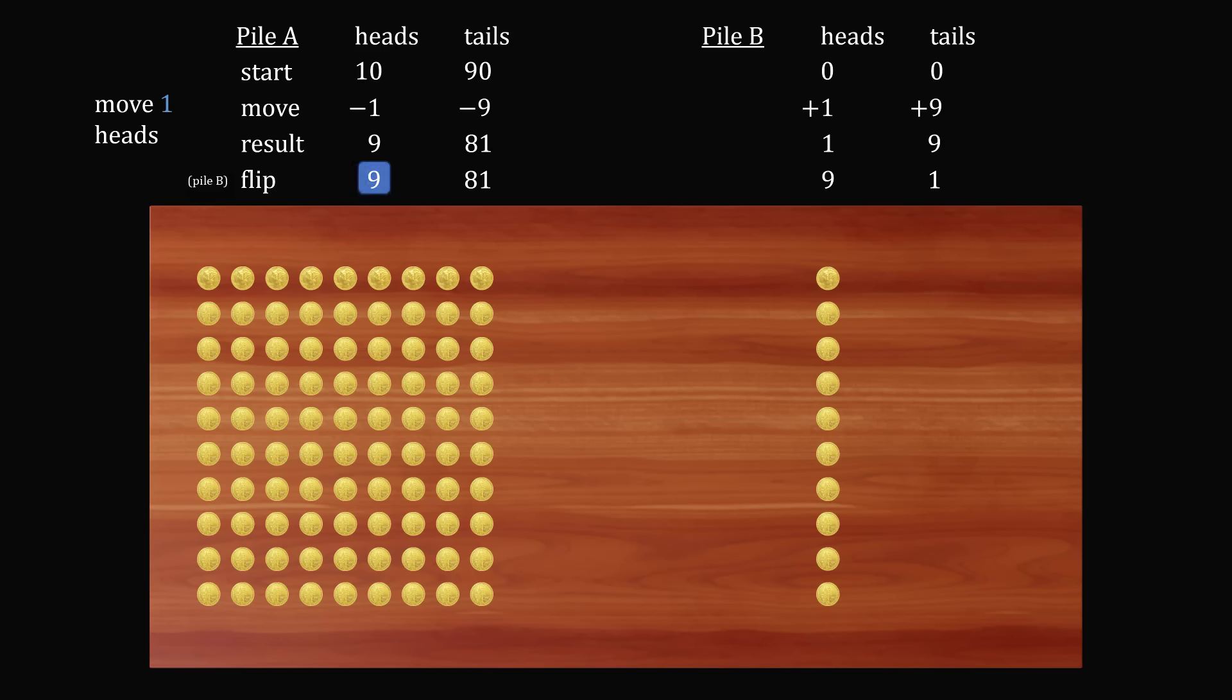We now need to flip every single coin in pile B. This will turn all the heads into tails and all the tails into heads. So we will end up exchanging these two numbers. So we have nine heads and one tail. Now in this case, we still have nine and 81 in pile A. And look, the number of heads in pile A exactly matches that in pile B. We have found a solution even though we didn't move all coins that were tails.